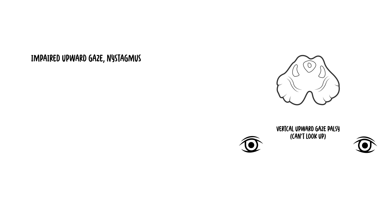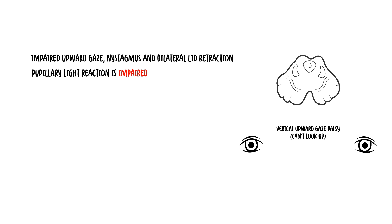The fourth and final midbrain syndrome: a 75-year-old man presents with impaired upward gaze, nystagmus, and bilateral lid retraction. On examination, his pupils do not react to light — there is impairment of the light reaction. However, accommodation response is intact. This last feature, where one does not respond to the light reflex but can accommodate and pupils constrict, is known as Argyll-Robertson pupil.